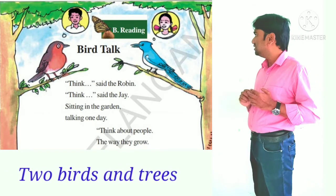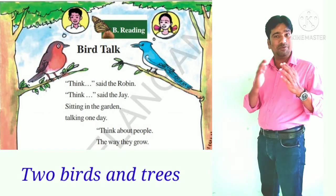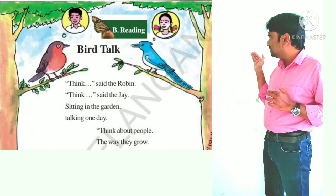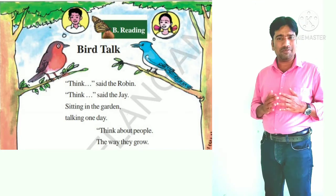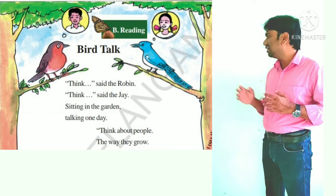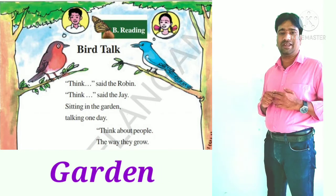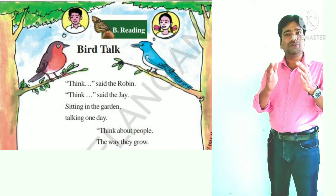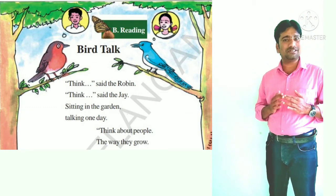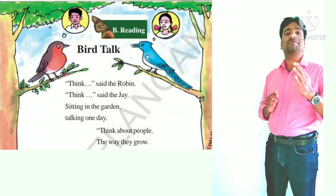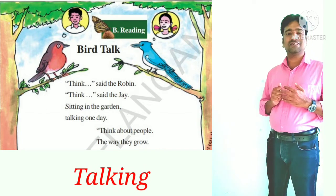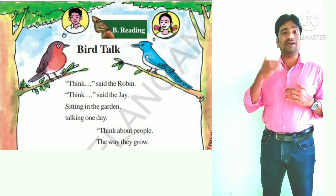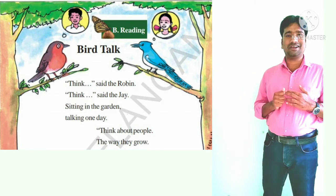Two beautiful birds and trees. That's nice. What do you think about this place? This is a garden. What are the birds doing in this picture? The birds are talking. Let's read the poem now to find out what they are talking about.